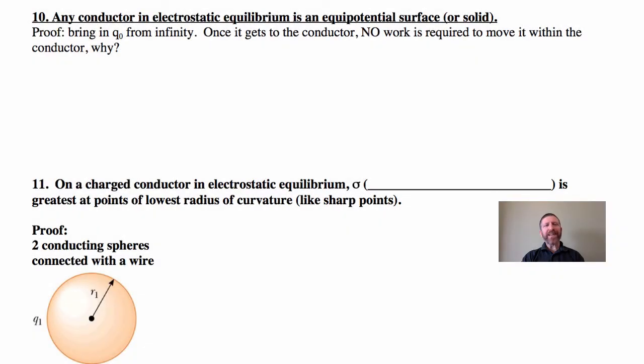Now we have some other really excellent and easy proofs that give us a whole lot of excellent and very cool information. But first we do have to understand that any conductor in electrostatic equilibrium is an equal potential surface or solid.